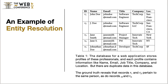Here is an example of an ER task. Table 1 shows the database of a web application. It stores profiles of professionals, and each profile contains information like name, email, job title, company, and location. There are duplicated records in this database, and the ground truth is that record 1 and record 2 pertain to the same person, as do record 3 and record 4.